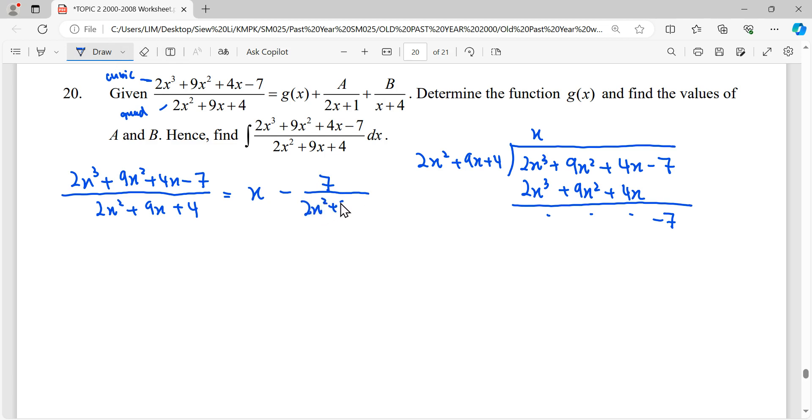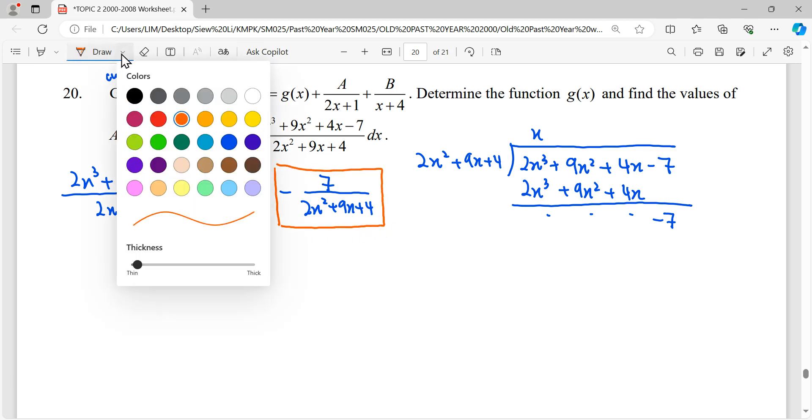2x squared plus 9x plus 4. So in our partial fraction, the first step we already done, make the fraction to be proper. Then to continue the next part we need to express this proper fraction into partial fraction.